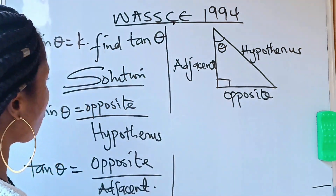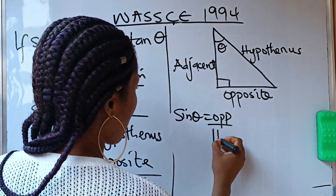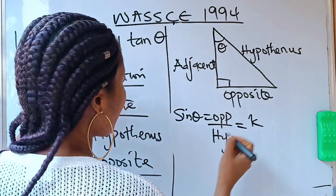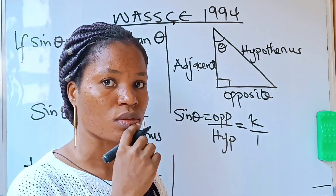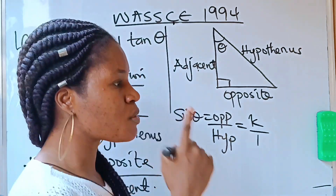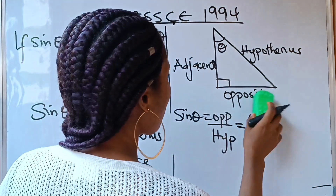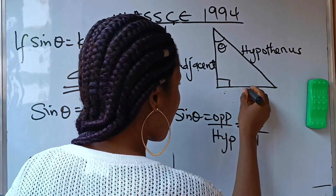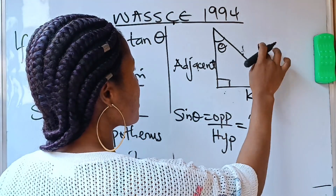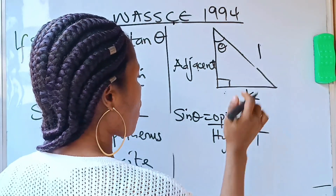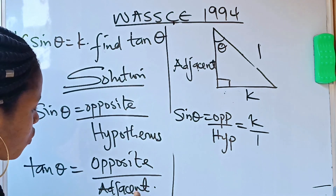Having established this, when we say sine theta equals opposite over hypotenuse, and we are told sine theta equals k, the only way the answer is k is if k is divided by one. That means our opposite is k and our hypotenuse is one. So in this triangle, I write opposite as k and hypotenuse as one. It is now remaining the value of our adjacent, which we need to find tan theta.